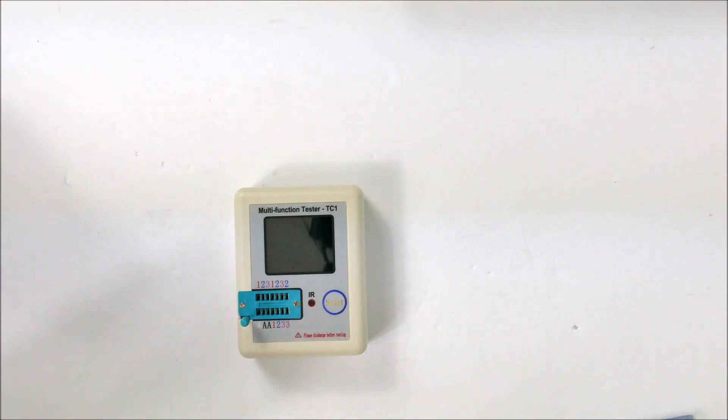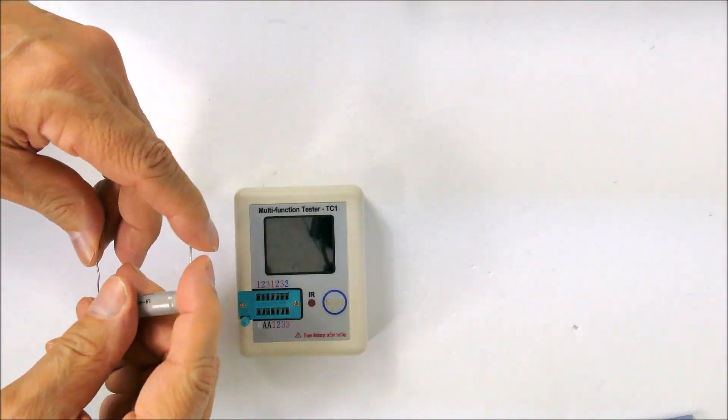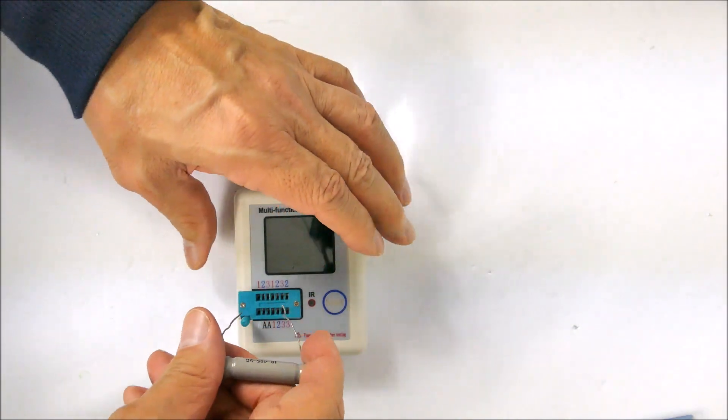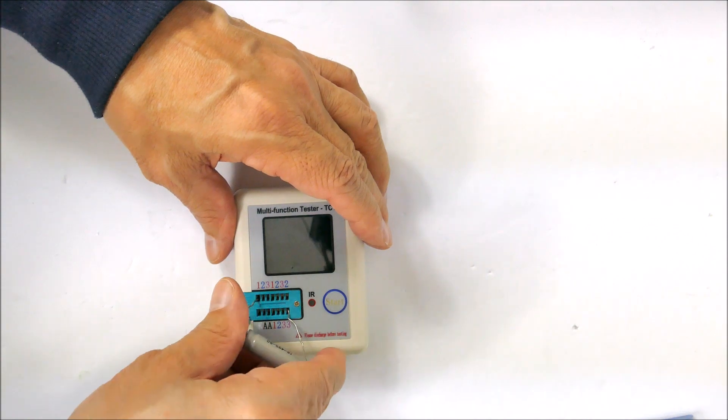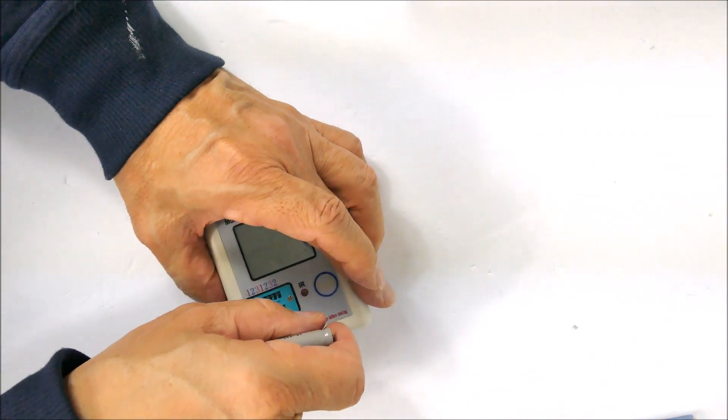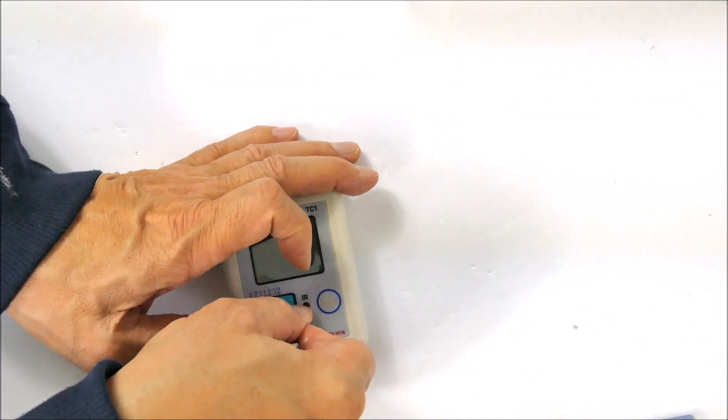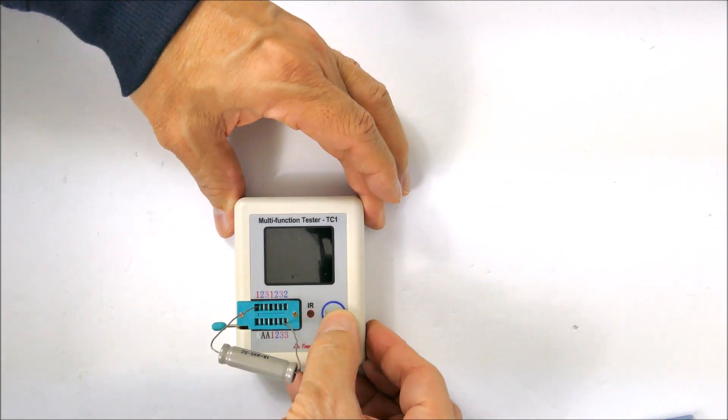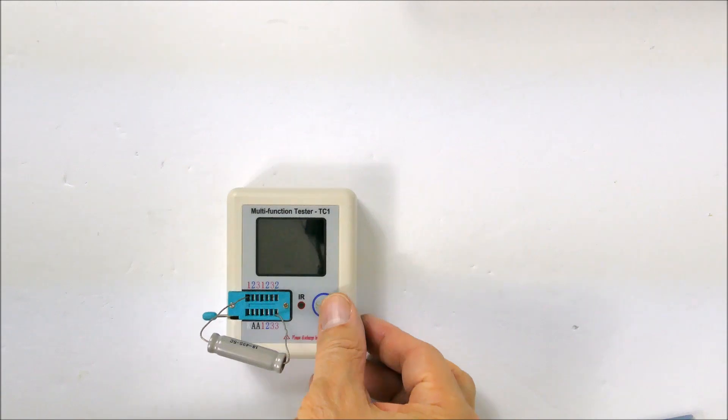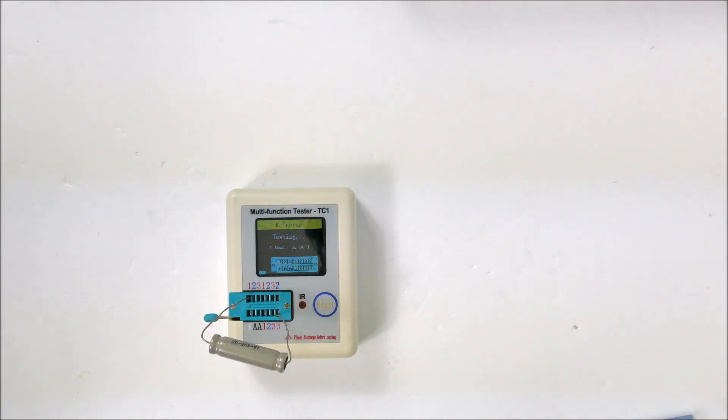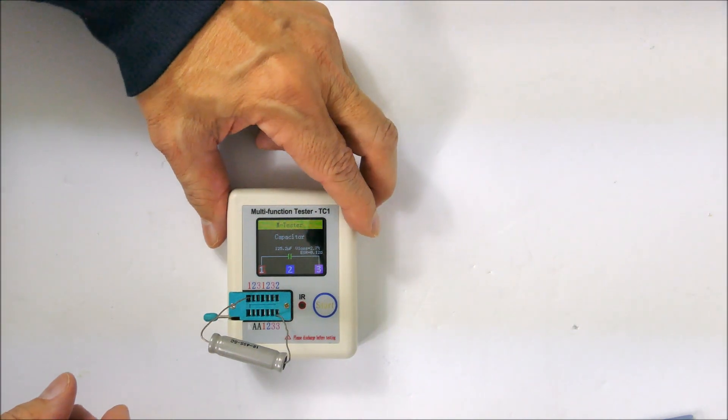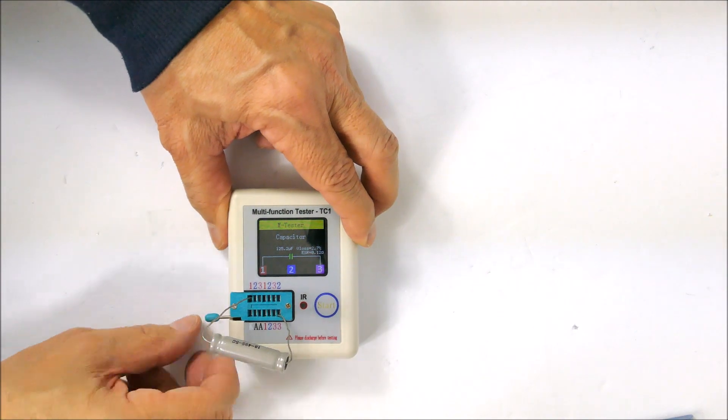So let's try a giant capacitor, or at least a big electrolytic capacitor. This one is a non-polarized electrolytic capacitor if you know what that is. It takes a while to test these big capacitors. This says it's 125 microfarads, ESR is 12 ohms. That's very cool because it's supposed to be a 100 microfarad capacitor.